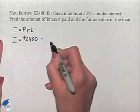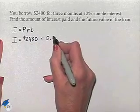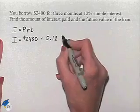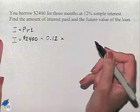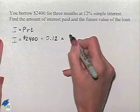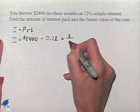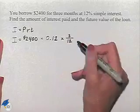The interest rate is 12%, so we write that as a decimal, 0.12. And we're going to multiply that times three months, which would be written in terms of its percentage of a year, which would be 3 twelfths.